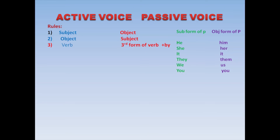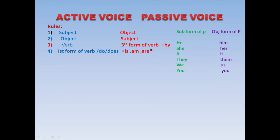Now let's look at the fourth rule. Our first three rules were: subject will change into object, object will change into subject, third form of verb comes, and 'by' is added. The fourth rule is: if in active voice the first form of verb is given, or 'do' or 'does' is given, then we replace it with 'is', 'am', or 'are'. Let's see some examples.